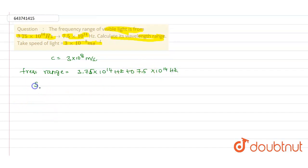We know that speed of light equals frequency times wavelength: c = λν. For the first frequency, we have 3.75×10^14 Hz.